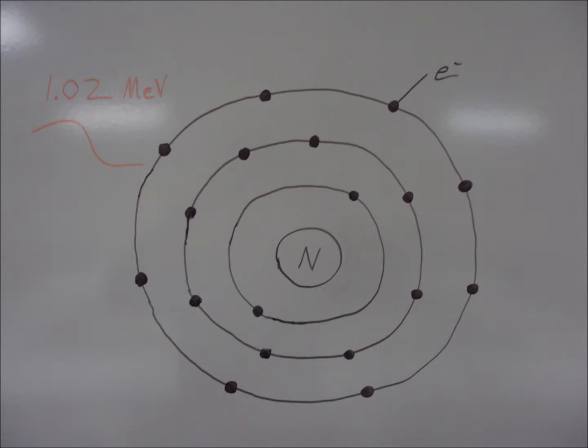Annihilation is when the beta positive interacts with a neighboring electron and they simply annihilate each other, causing their matter to be transformed into energy in the form of two low energy photons.